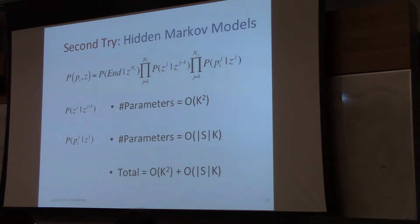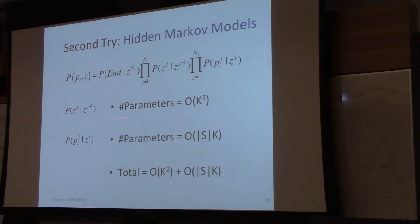A second approach is to model as a hidden Markov model. A hidden Markov model assumes there's some set of latent states z. If the number of latent states is k, you have a transition matrix and an emission matrix — the number of parameters is much, much smaller. We've seen this already.